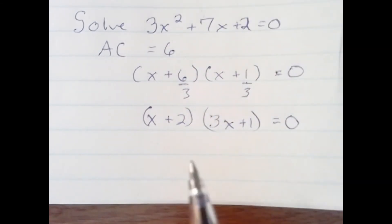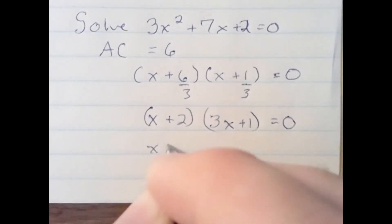Now, it's like we have two equations to solve for x. x plus 2 equals 0, so one solution is x equals negative 2.